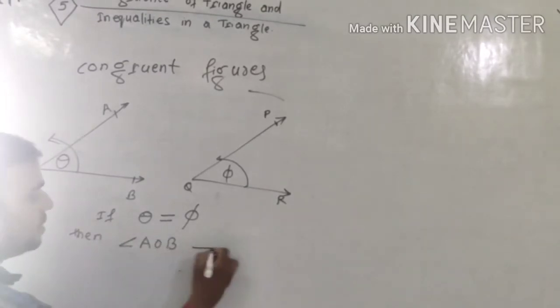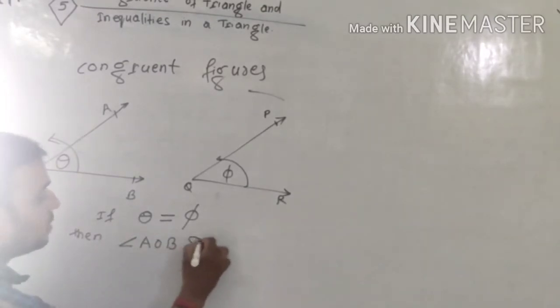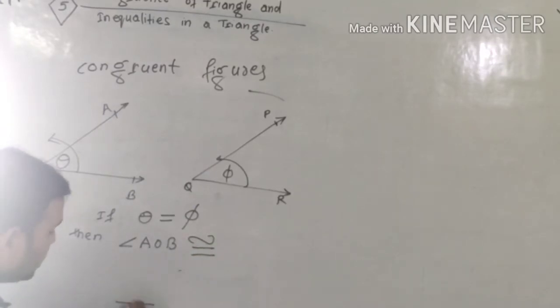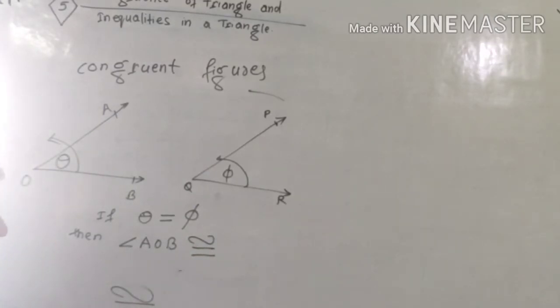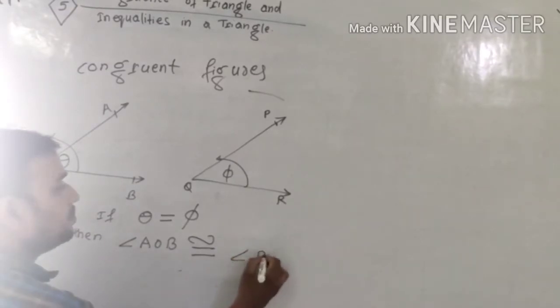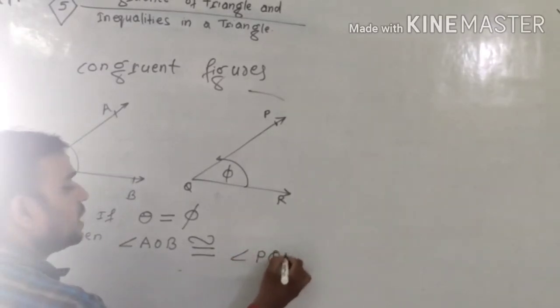Dear students, angle AOB is congruent to angle PQR. This symbol here is the sign of congruence.